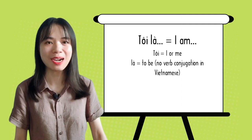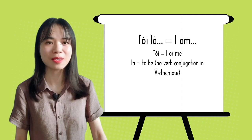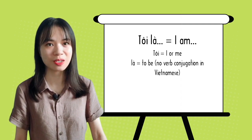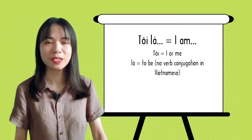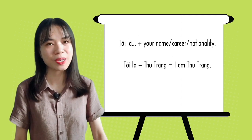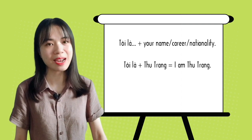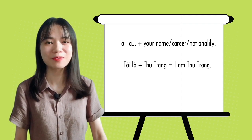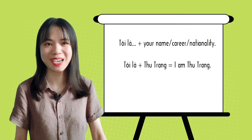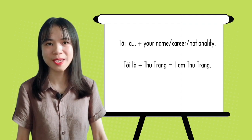Tôi là — that means I am in Vietnamese, with the same word order as in English. So after Tôi là, you can add your name, your career, or your nationality. But for this lesson, let's just stick with your name for now.